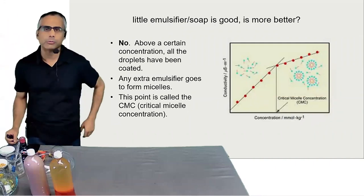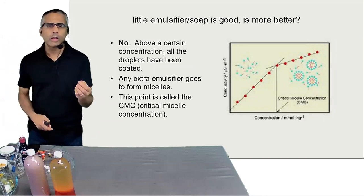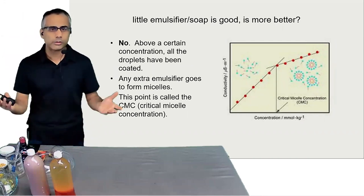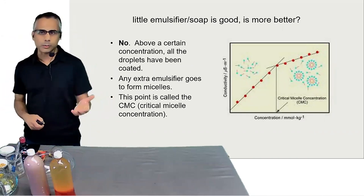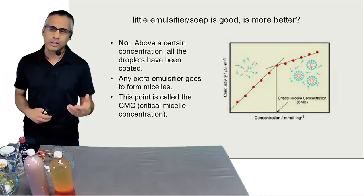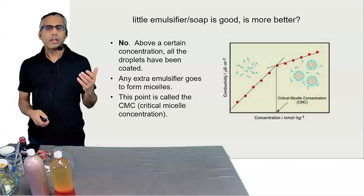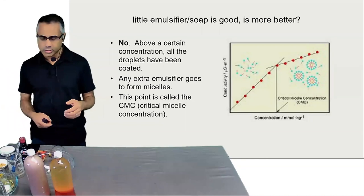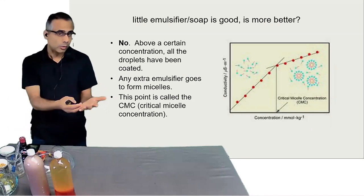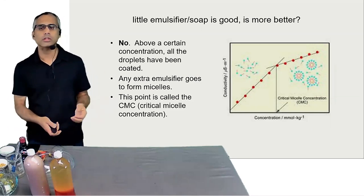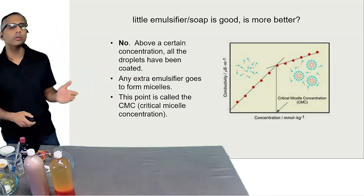A tip: people tend to use a lot of soap — is more better? Actually, no. Dish detergent and liquid soaps are actually quite diluted, because manufacturers know people tend to use too much. If you use too much, once you've used up the emulsifier coating the droplets or dirt, the rest just clumps together and forms micelles — so you don't want to use too much.